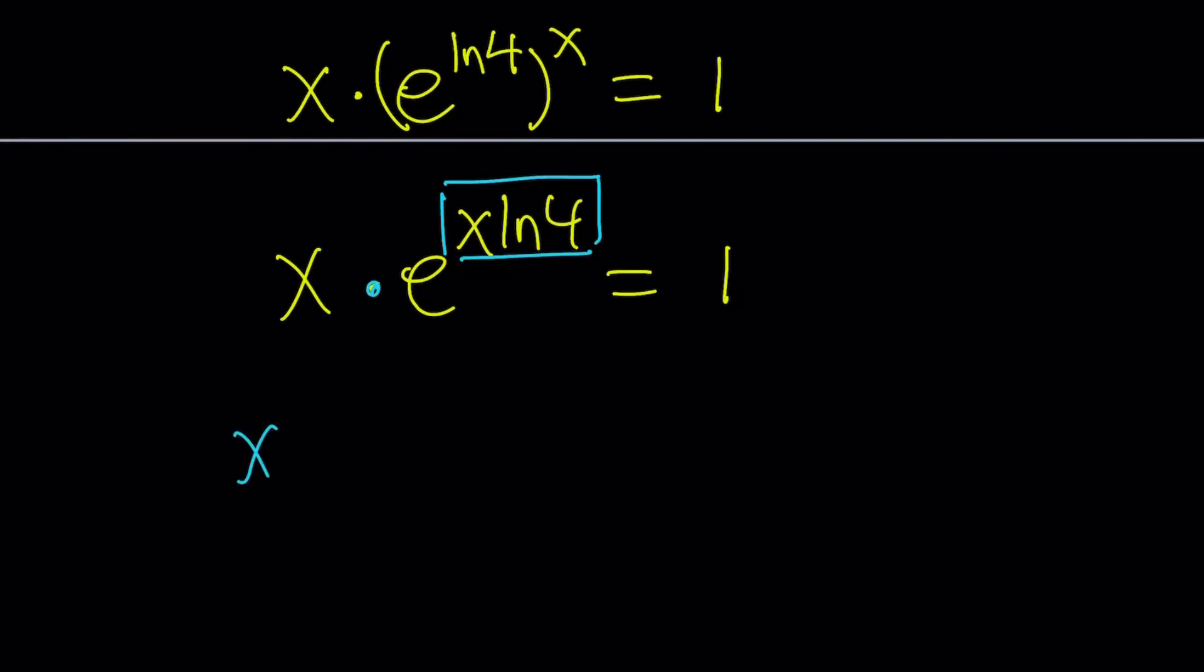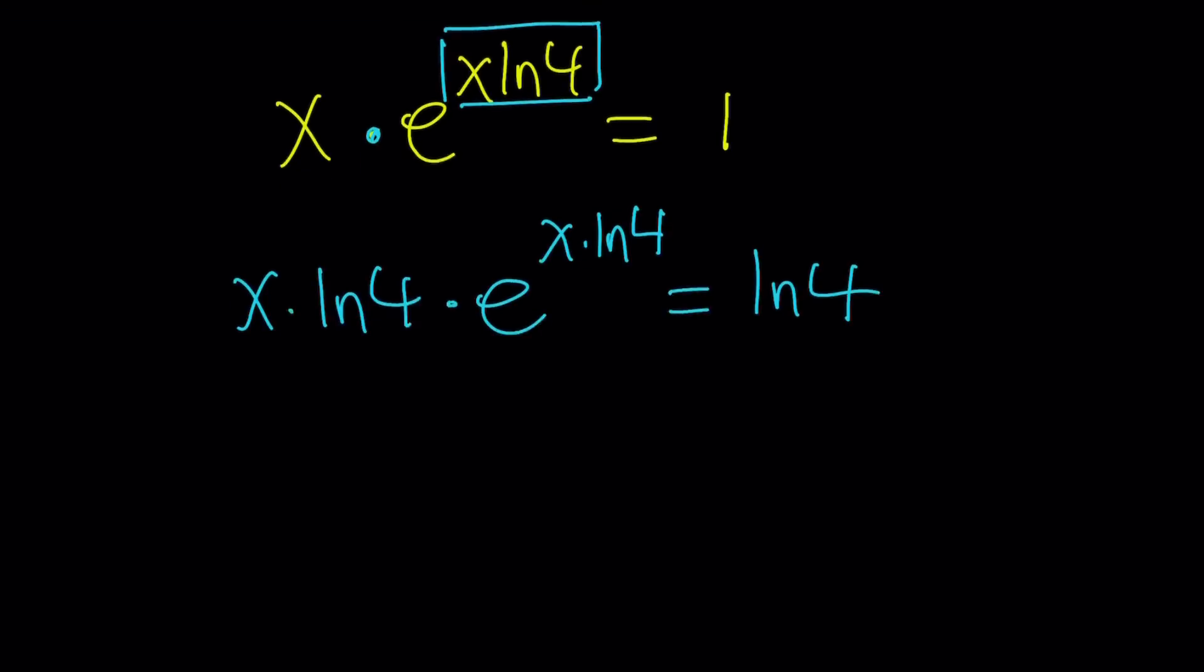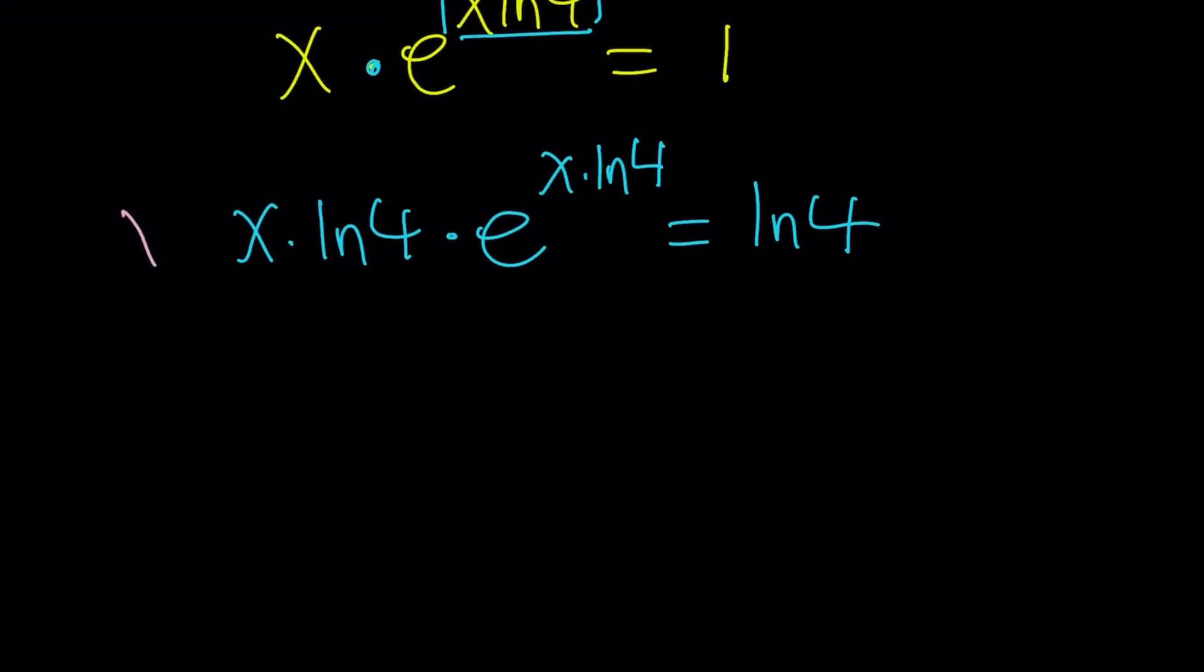So, X times ln4 times E to the power X times ln4. Notice the two things. Equals ln4. Great. I got it. Yay. Well, you just got to Lambert both sides, right? That's what we still got to do. So, let's go ahead and Lambert this and Lambert that and you'll get the answer.